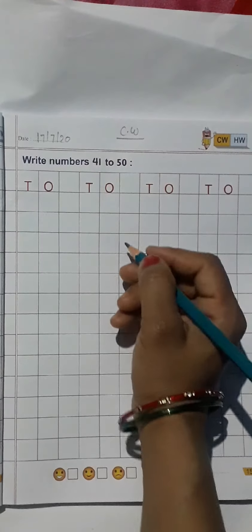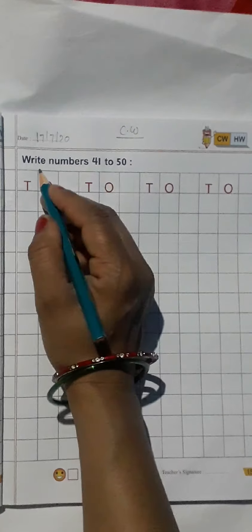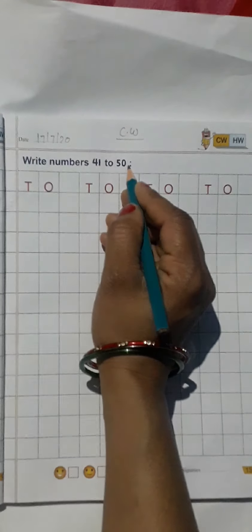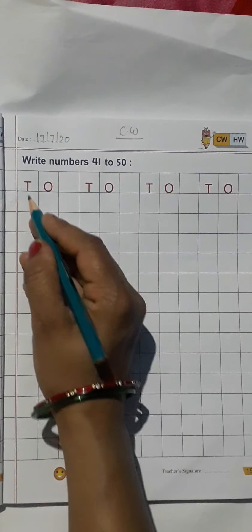What is the question? Write numbers from 41 to 50. Okay, now write the number. T means tens place, O means ones place.